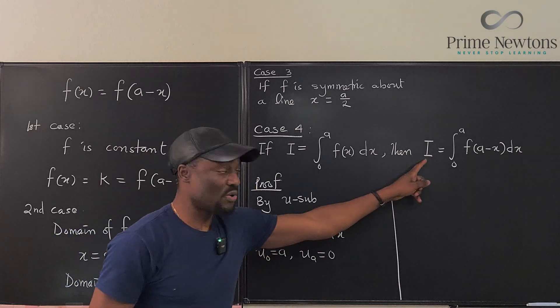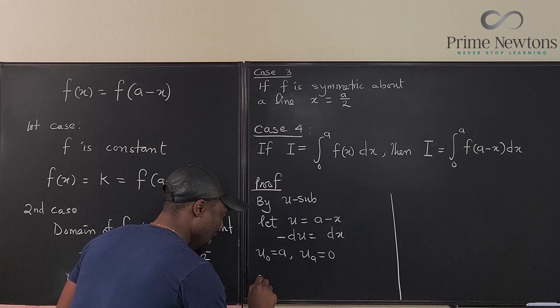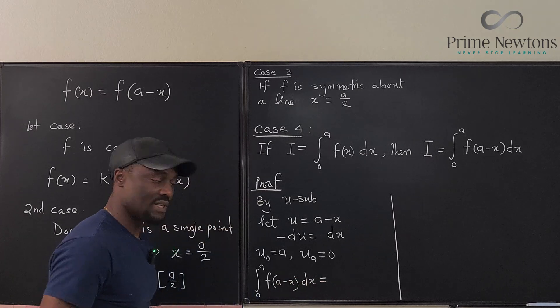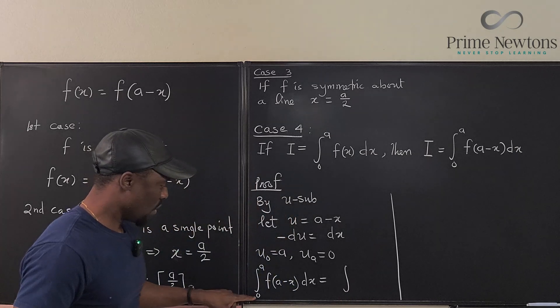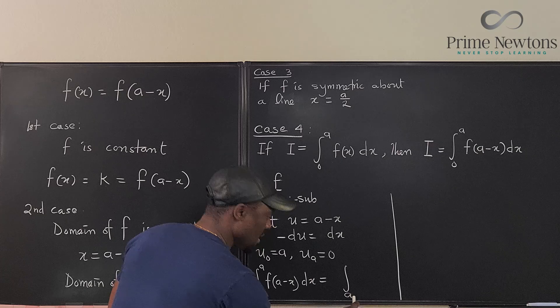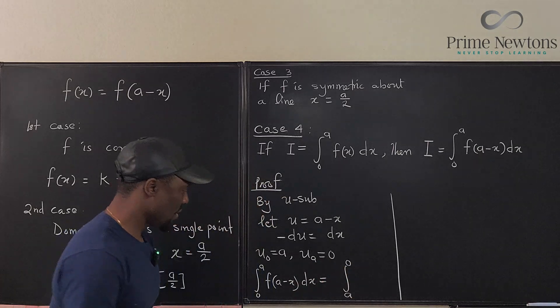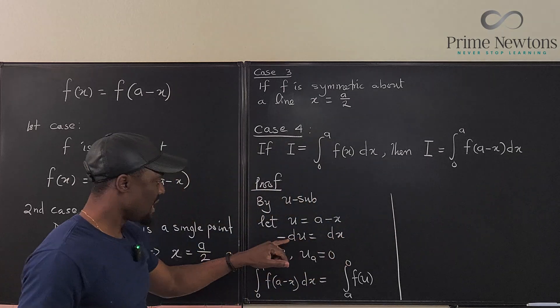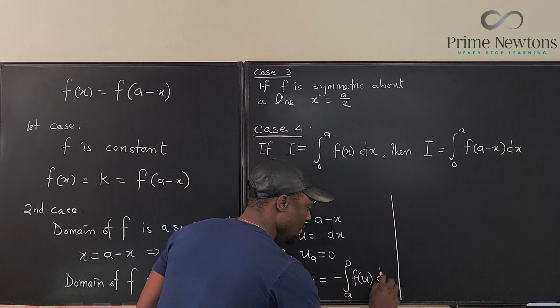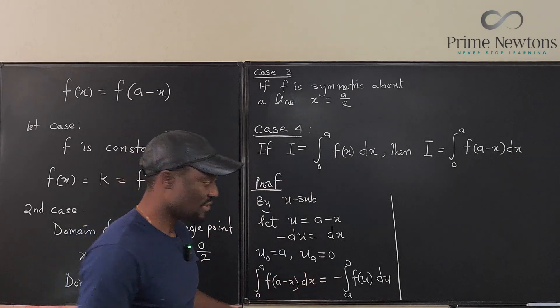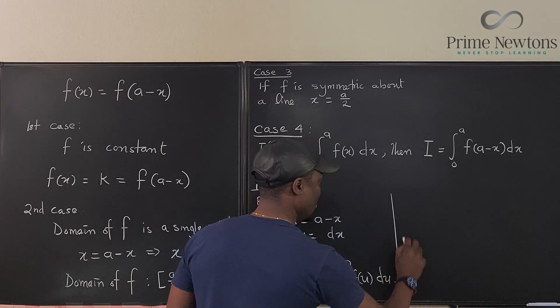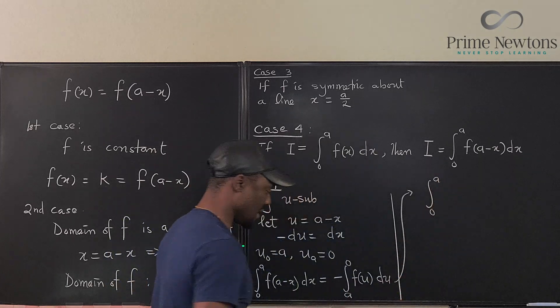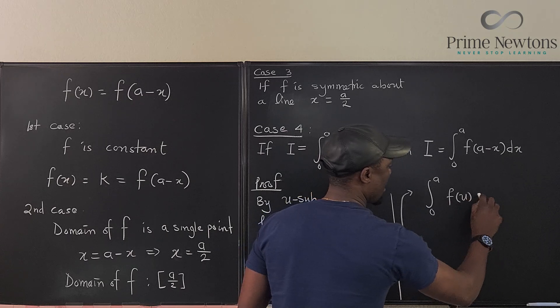So that means the integral that we have here, this integral zero to a of f(a-x) dx, can actually be written as the integral from, see the lower boundary when it was evaluated at zero is now a, the upper boundary is now zero, and we're going to have f of u and our dx is now negative du. We can put that negative here and put du here, but we know this negative can flip these boundaries so that we have this to be equal to, let's just go this way and say this is the same thing as the integral, because now we can flip this back, so it's zero to a and this is f(u) du.